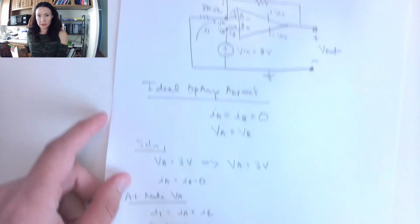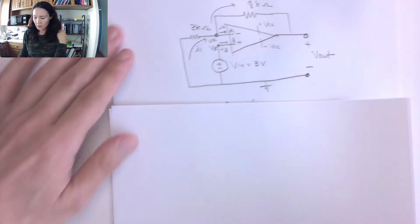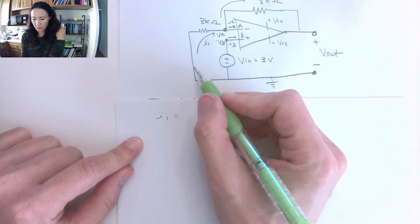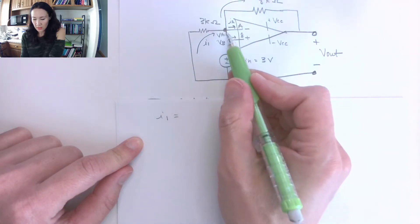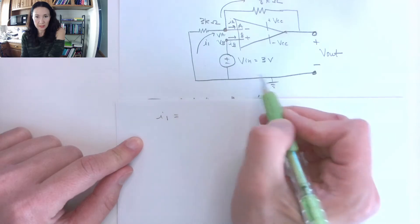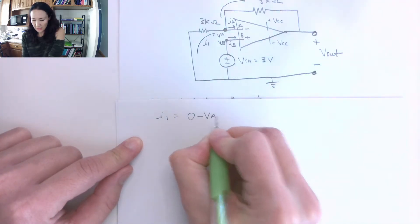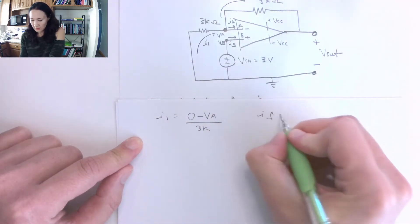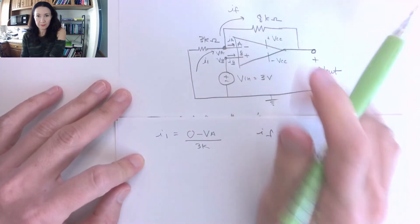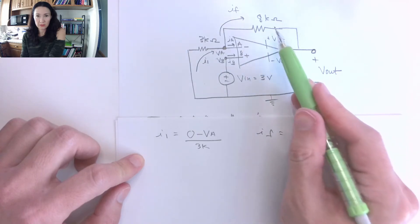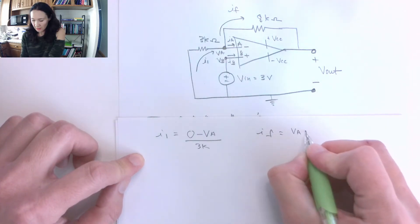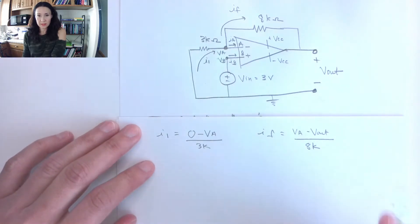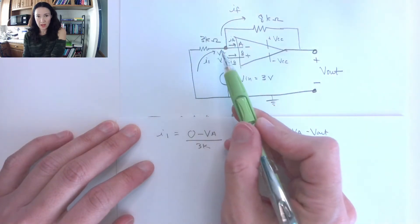Now the next step if I'm using node voltages to solve this is I can replace current I1 with the voltage between this node and that node divided by the resistor between. So this is connected to ground. So this is just going to be zero minus VA all over 3K. So that's the current coming here. This IF current, I can replace this with VA minus Vout divided by the resistor between, which is 8K. So this is VA minus Vout over 8K.